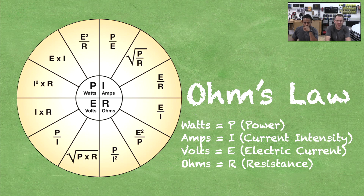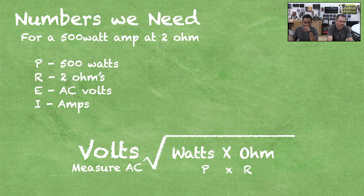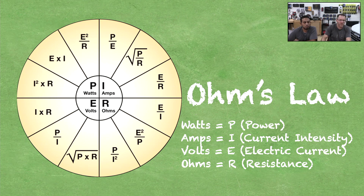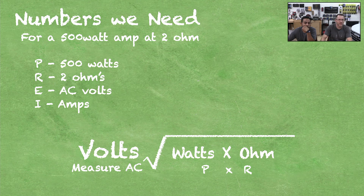What we're going to figure out today is how much voltage we should be getting out of our amplifier on a 500-watt amp. Looking at the Ohm's Law chart, we want to find voltage — that's E. We know power, which is 500 watts, and we know R, which is resistance. The numbers we need: it's a 500-watt amp running at two ohms. We write down power = 500 watts, resistance = 2 ohms, and we want to find E, which is AC voltage.